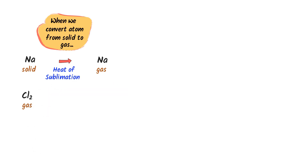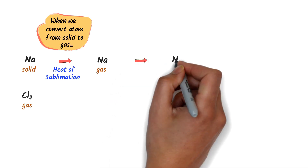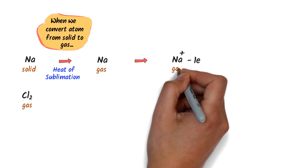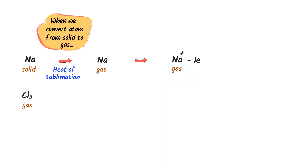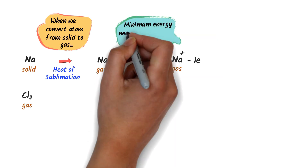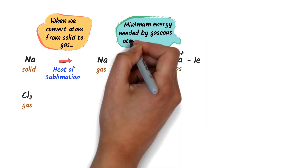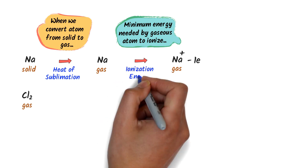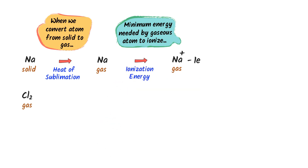Secondly, we need to fry the gaseous sodium atom — we will remove one electron from it to make it a positive sodium ion. Remember that when we provide a minimum energy to the gaseous atom to lose one electron and become a positive ion, this energy is called ionization energy.